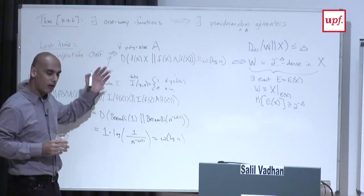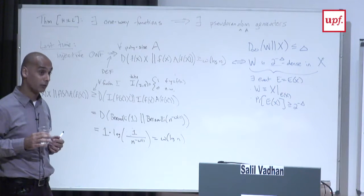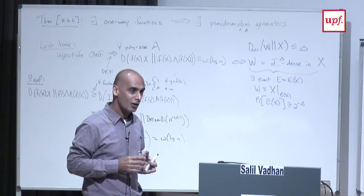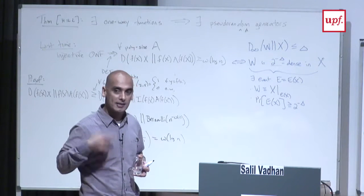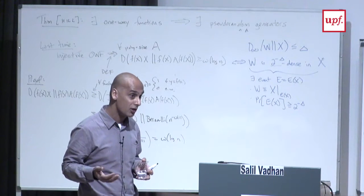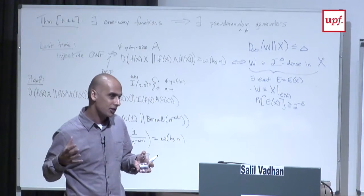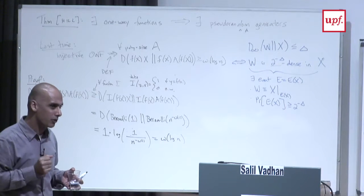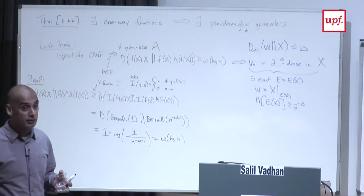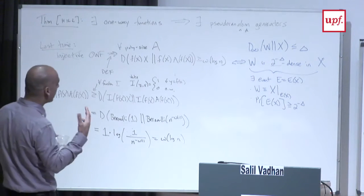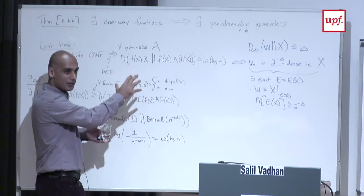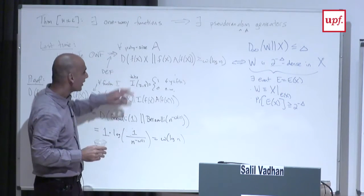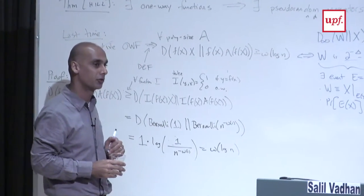Pagliazzo, Luby, and others looked at this notion of distributional one-way functions where the task of an adversary is to sample an almost uniform pre-image, measured in statistical distance rather than divergence. One fundamental result from that period is that the existence of one-way functions is equivalent to the existence of distributional one-way functions. So while we've lost something about this particular F, we haven't lost something in our complexity assumption.